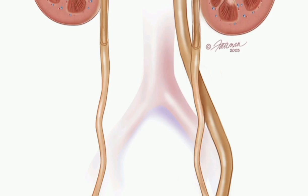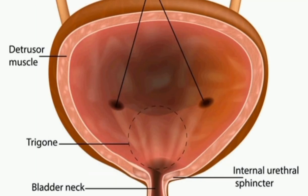The ureters measure about 30 cm in length. They move downward and open into the urinary bladder. The movement of urine in the ureter is through peristalsis, similar to the peristalsis movement in the esophagus while food is moving from the mouth to the stomach. Here also, the ureter performs peristalsis movement which is helpful for the movement of urine to the urinary bladder.